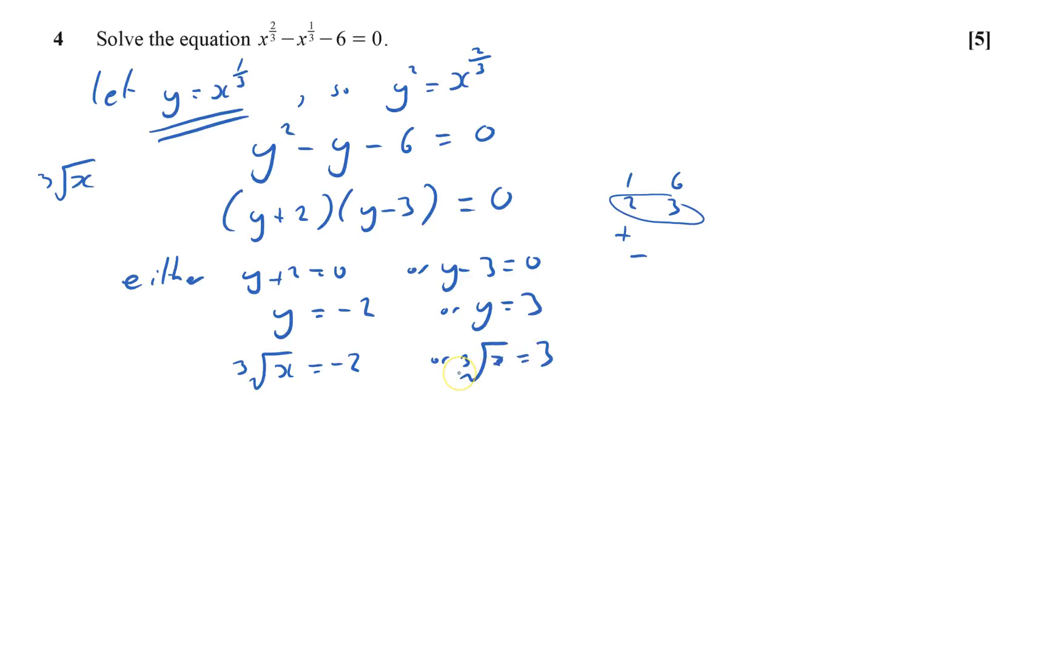I don't want a cube root of x, I want x. So I need to cube both sides and that will vaporise the cube root sign and get x equals minus 2 cubed which is minus 8, or x equals 3 cubed which is 27.